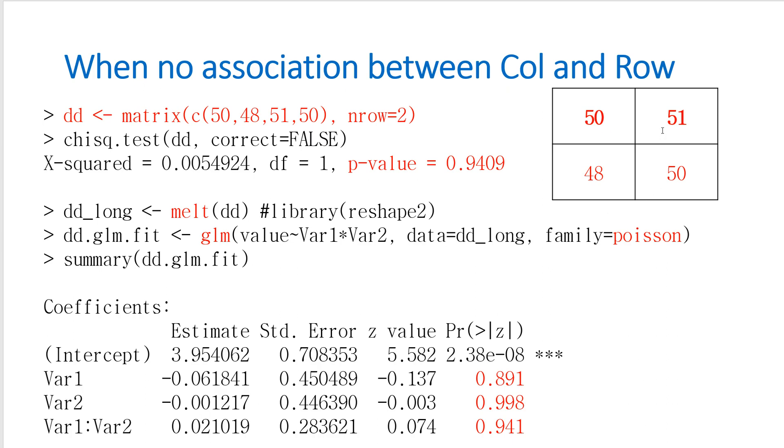As you can see, if we consider this matrix, then it shows no significant p-value. So it means that it shows homogeneity.